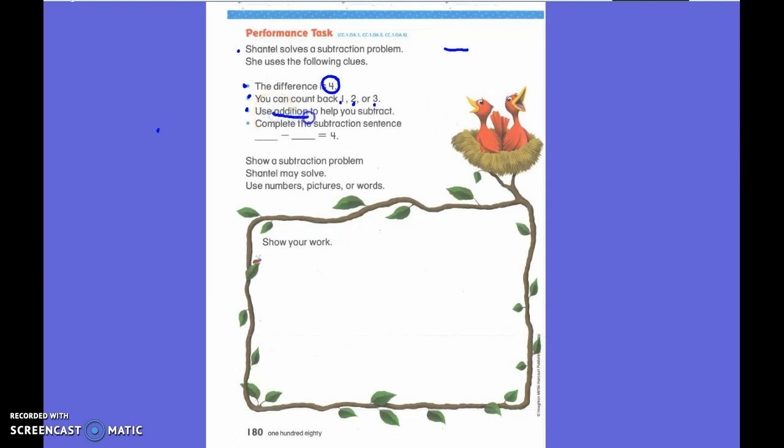Use addition to help you subtract. So not only do I need a subtraction sentence, but I need its addition. I need the addition one that looks exactly like it. And if it looks a lot like it, what is it called? A fact family. So whenever I complete the subtraction sentence, I still need its family member, but it has to be addition.